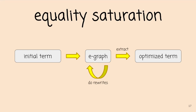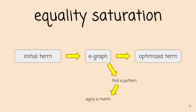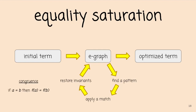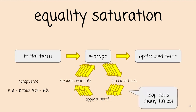Let's break down the equality saturation loop. First, find a pattern by looking for the left-hand side of a rewrite, which generates a substitution. Then apply a match by adding the substituted term into the E-graph where the match was found. Finally, restore some data structure invariants. A really important invariant is congruence — the equivalence relation an E-graph represents is also a congruence relation. Congruence can help you find a lot more equivalences. We run this loop many times — it's the hot loop of equality saturation, so to make it faster we need to do something about this loop.